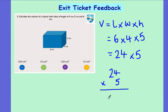4 times 5 would give me 20. 2 times 5 gives me 10 plus 2. 120 was your answer.